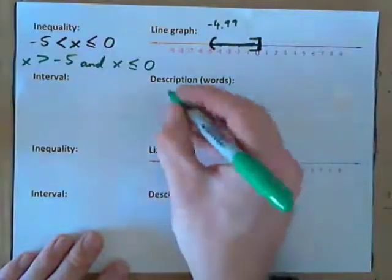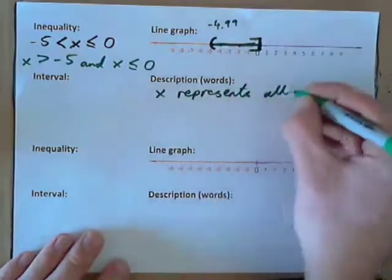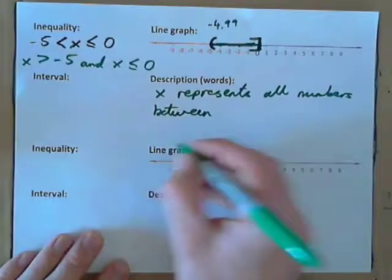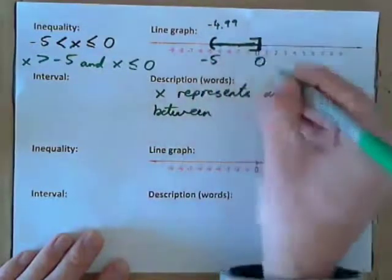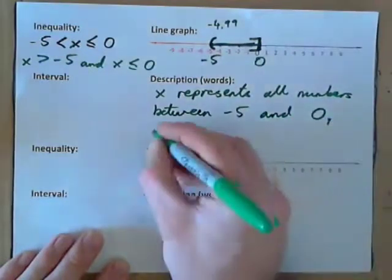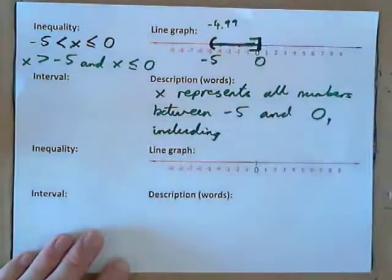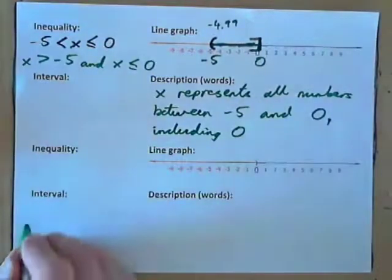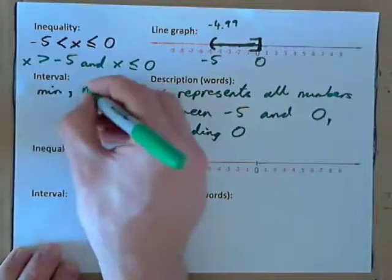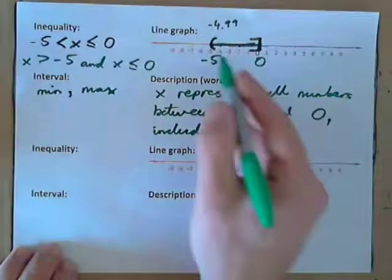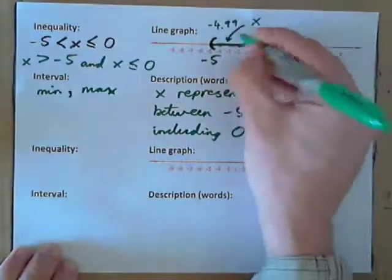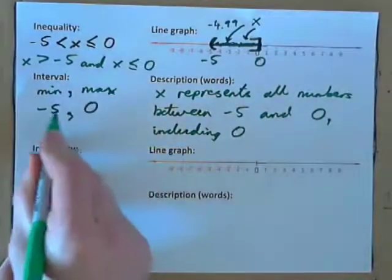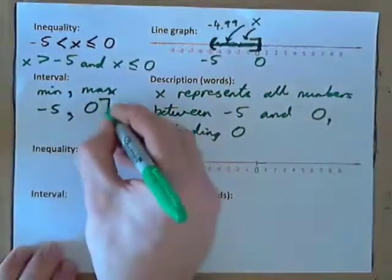As a description: x represents all numbers between negative 5 and 0, including 0. Does it include negative 5? No. Does it include 0? Yes — including 0. For the interval, write min, comma, max. The minimum number is negative 5, the maximum is 0. Negative 5 is not included and 0 is included, so the interval is (-5, 0].